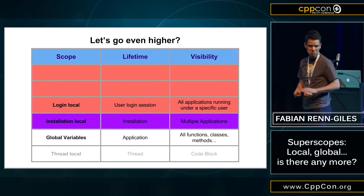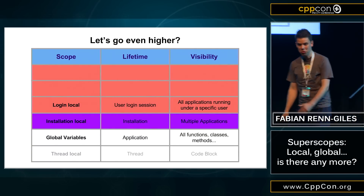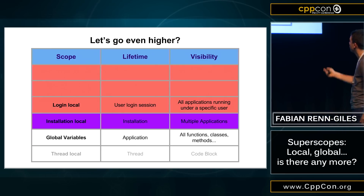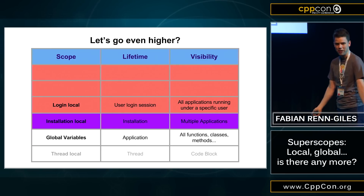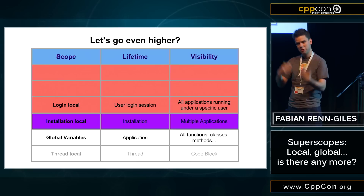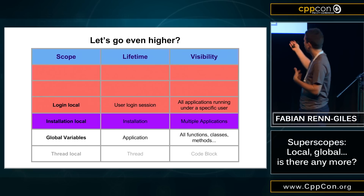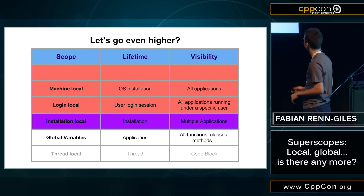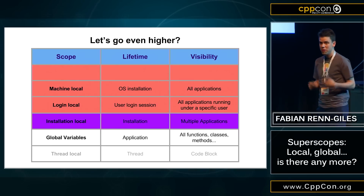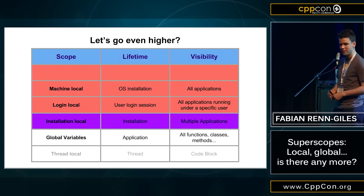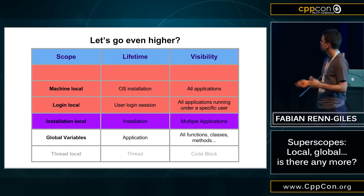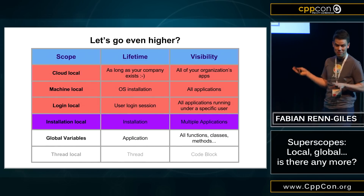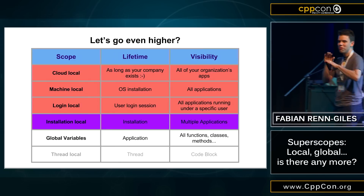Can we do other crazy stuff? That was just one idea of super scope. How about a `login_local` - when the user logs in some variables get instantiated, all applications running under that user can use them, and when the user logs out they get destructed. That might be useful. Or maybe `machine_local` - when the OS gets installed some things get instantiated and destructed.